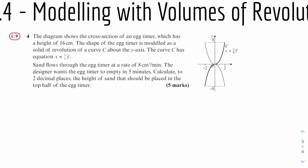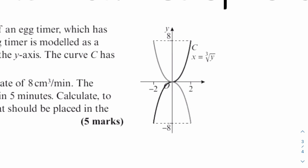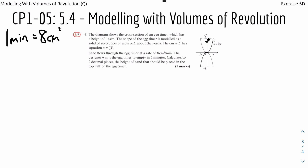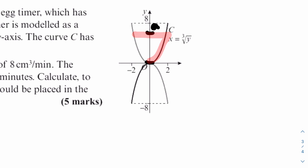The sand is only placed above y equals 0, so the lower bound is y equals 0 and the upper bound we can set as A. Sand flows through at 8 cm cubed per minute, and the designer wants it to empty in 5 minutes. So in 5 minutes, 8 times 5 equals 40 cm cubed flows through. Therefore the volume from y equals 0 to y equals A must equal 40 cm cubed. We set up the volume of revolution equation to find A.